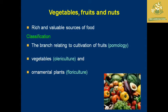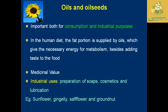The third classification is vegetables, fruits, and nuts, which are rich and valuable sources of food. They are further classified based on study branches: the study and cultivation of fruits is called pomology, the cultivation of vegetables is called olericulture, and the cultivation of ornamental plants is called floriculture.